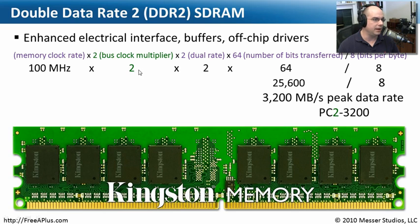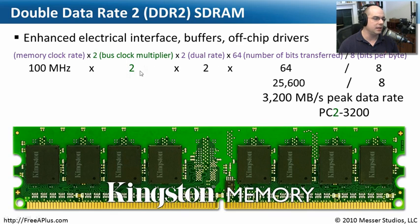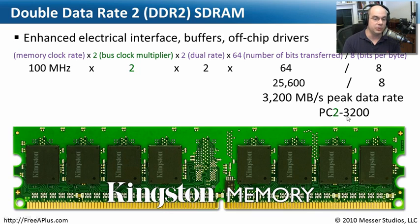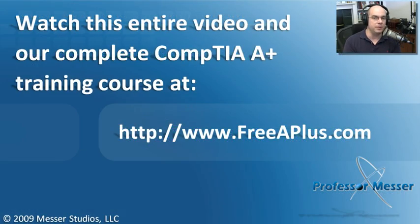Because of these improvements, there is a different calculation for DDR2. At 100 MHz, the bus clock multiplier becomes 2 instead of 1. So: 100 × 2 × 2 × 64 = 25,600 bits transferred. Dividing by 8 gives 3,200 MB/s peak data rate. Instead of PC dash, we use PC2 to designate DDR2. So PC2-3200 means this is DDR2 memory with a peak data rate of 3,200 MB/s, and you use the PC2 label to ensure it's spec'd for the right motherboard.